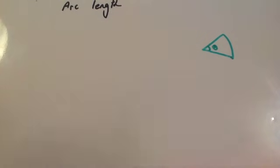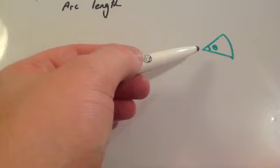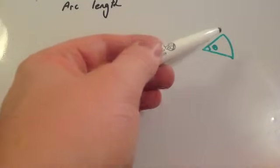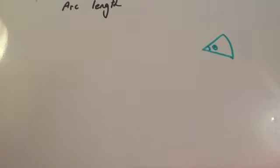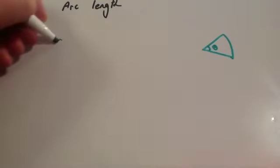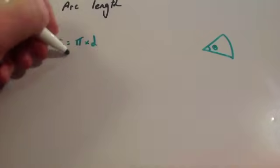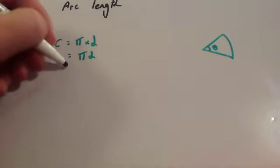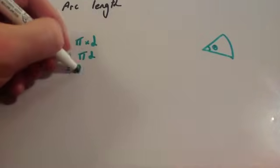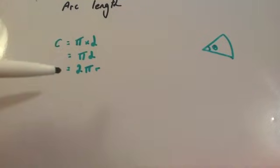In this video we're going to look at arc length. Here I've drawn a sector with the center, the two radii, and the arc around the outside. Remember an arc is part of the circumference. The circumference of a circle is pi times diameter, pi d, or 2 pi r.